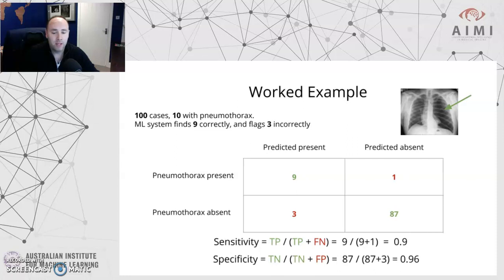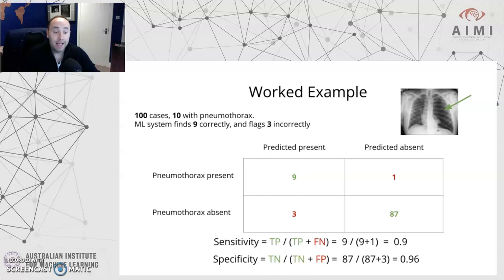In the second row, we know the algorithm flagged 3 incorrectly against the ground truth — so that's 3 false positives. We subtract that from the 90 negative cases: 90 minus 3 equals 87 true negatives. There we have our simple confusion matrix. Taking those numbers, the sensitivity is 9 divided by 10, giving 0.9. The specificity is 87 divided by 87 plus 3, the total ground-truthed as negative, giving a specificity of 0.96. This system is actually very good — something you might want to see in clinical practice: very high sensitivity and very high specificity.